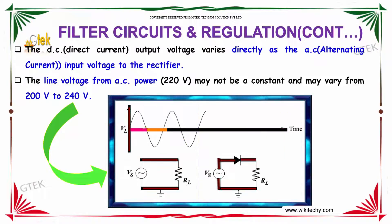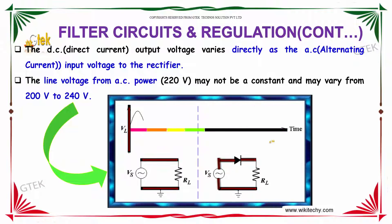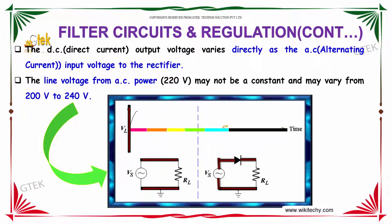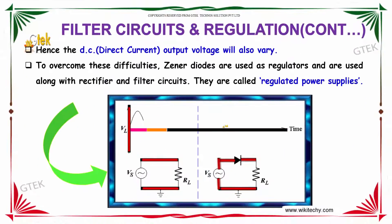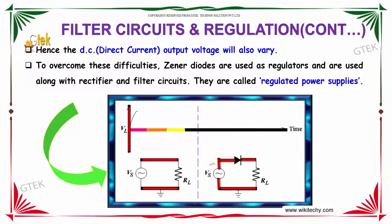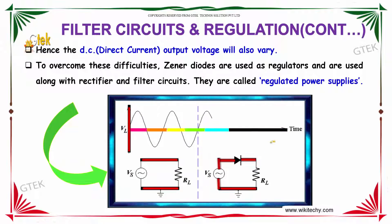The DC output voltage varies directly as the AC input voltage to the rectifier. The line voltage from AC power may not be constant and may vary from 200V to 240V. Hence, the DC output voltage will also vary. To overcome these kinds of difficulties, we introduce a zener diode as a regulator.